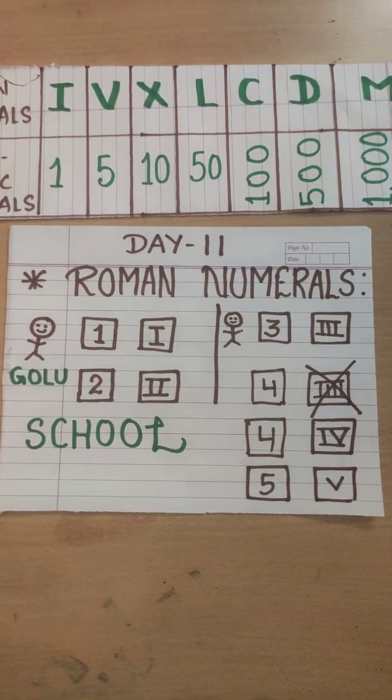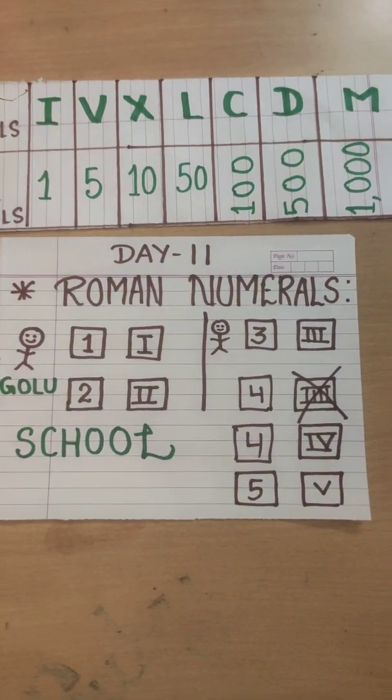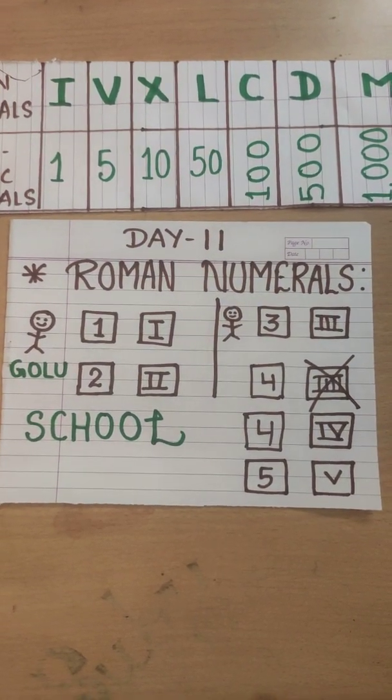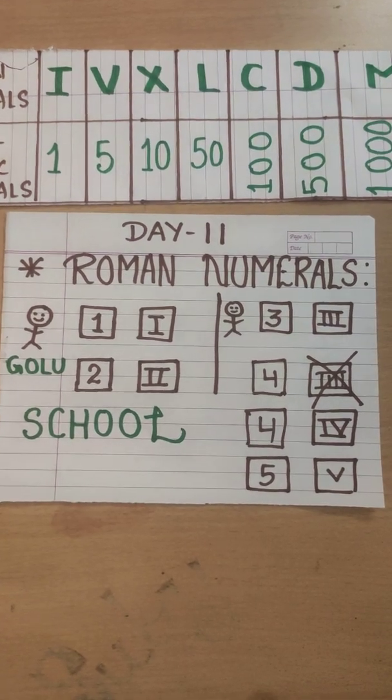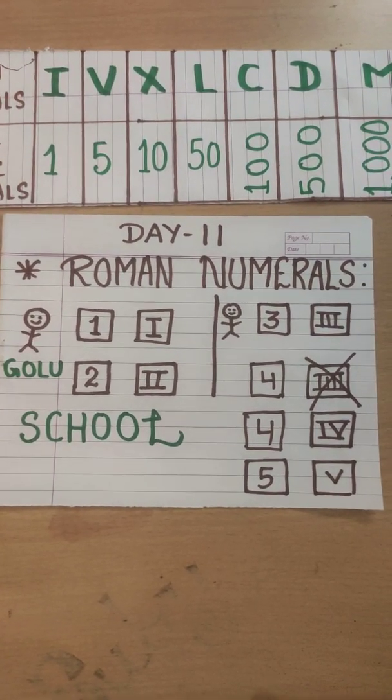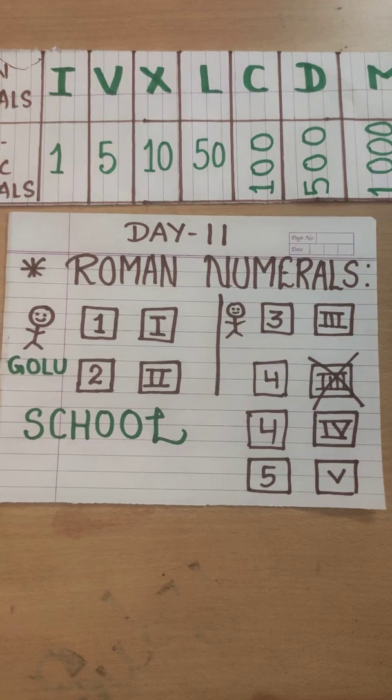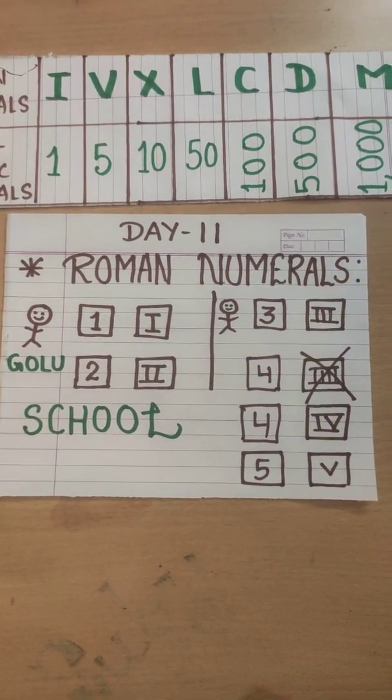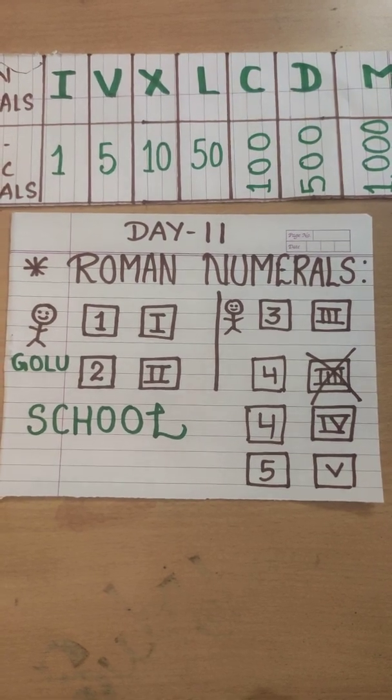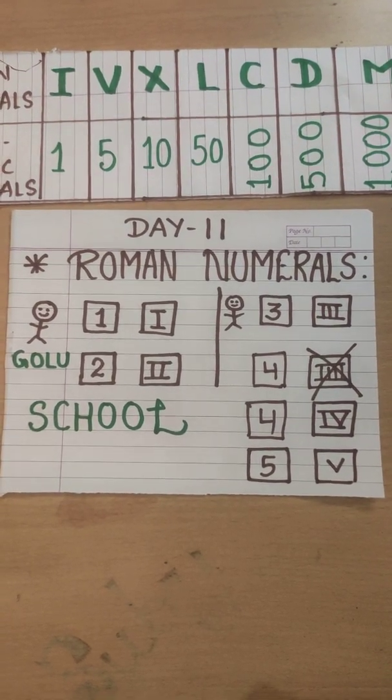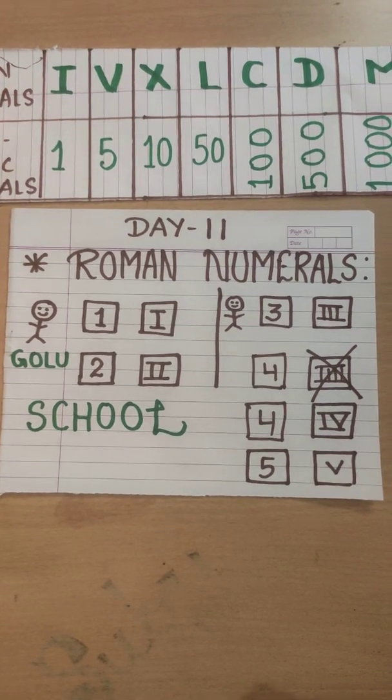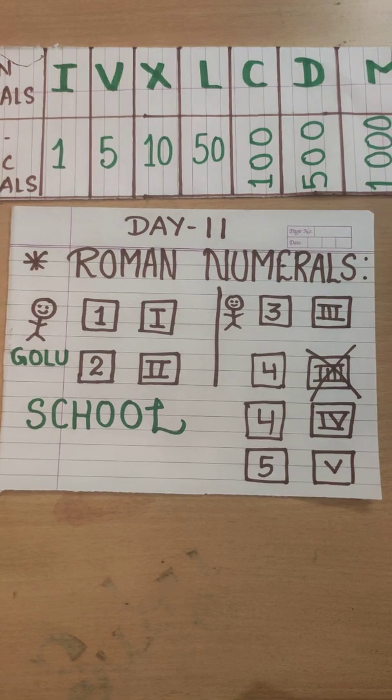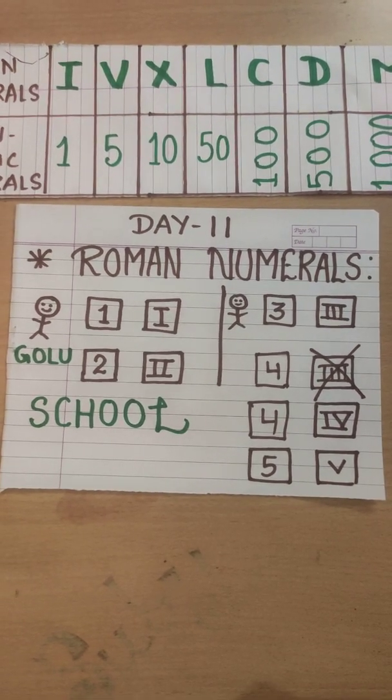Golu likes to go to school. When he went to school, he went to class first. In that class, he saw that at the top of the class it was written a letter I, class I. He thought okay maybe it could be the way to write 1. Then he saw class 2. He saw that there was a symbol 2 times I as of 2, so he thought okay it could be the way to write 2. Then he thought okay fine it could be the same way for 3, 4 and then 5.